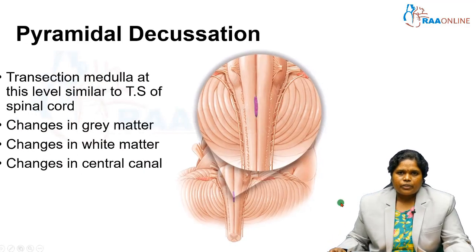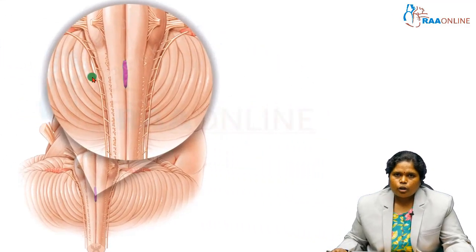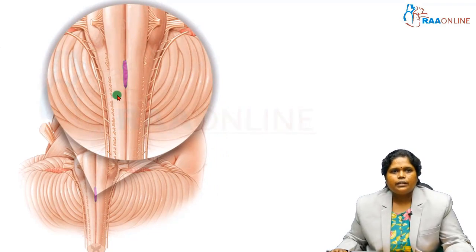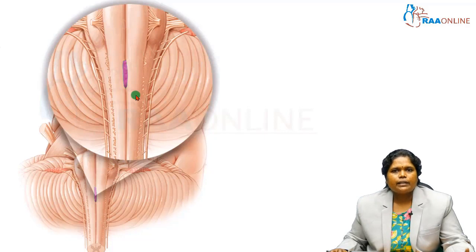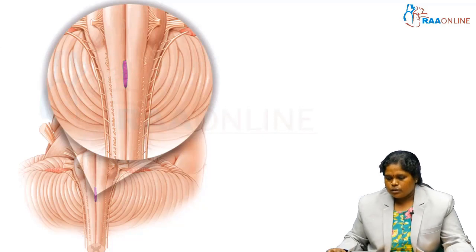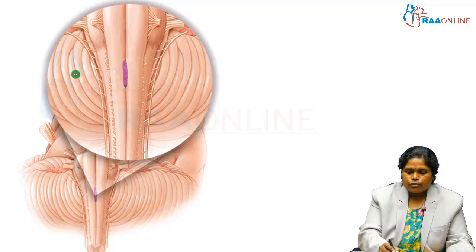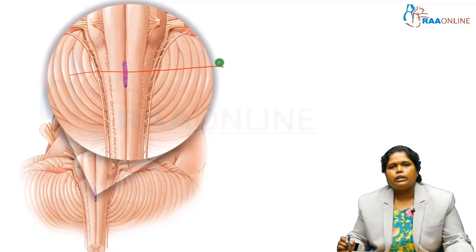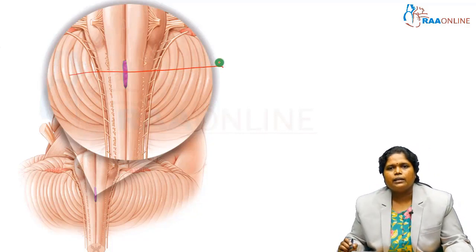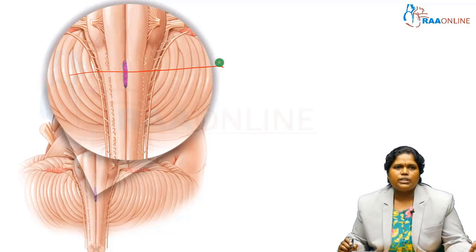Here you can see the image of medulla oblongata. To study the internal features, we have to make a transverse section at different levels. We are going to make a section at this level — the purple color structure you see is the pyramidal decussation. We are going to make a transverse section here and see the features.